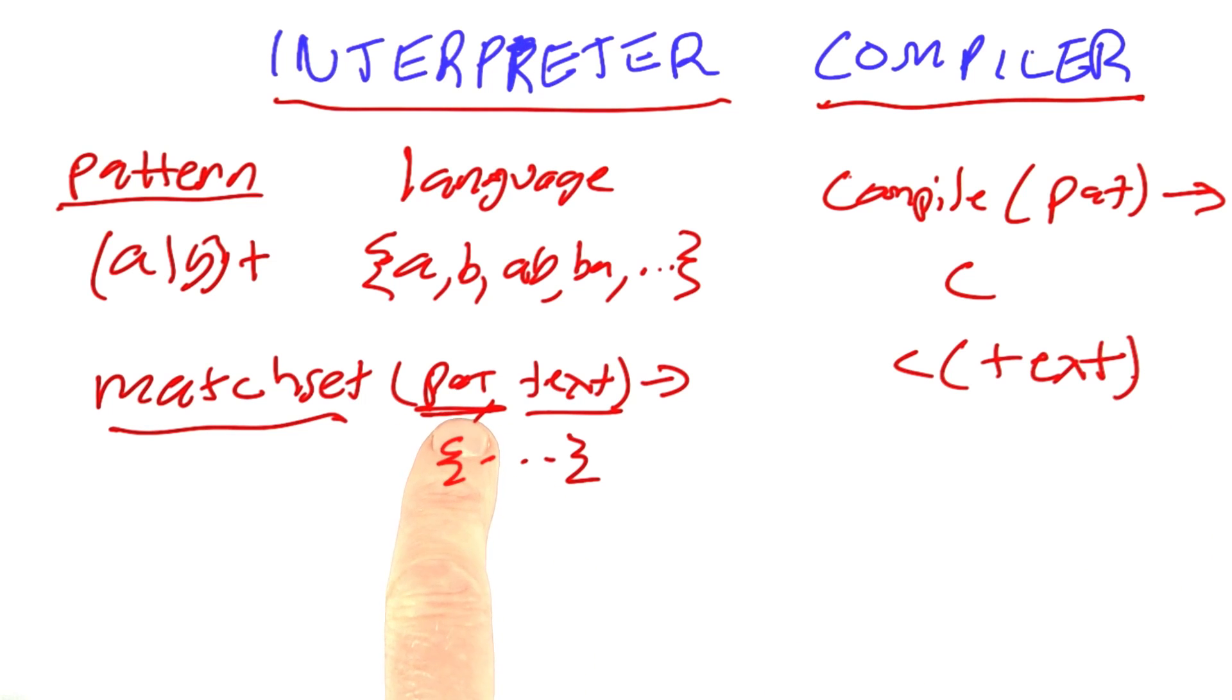Here, work can be done repeatedly every time we have a text. Here, the work is split up. Some of it is done in the compilation stage to get this compiled object, and then the rest of it is done every time we get a new text.